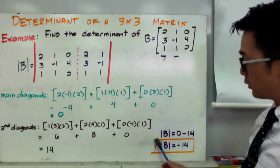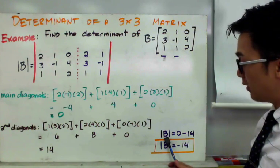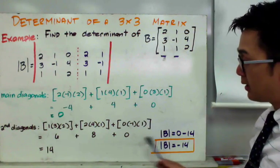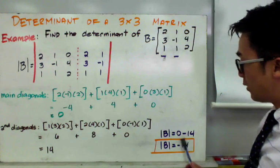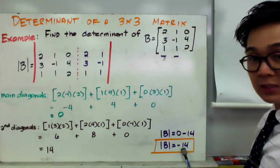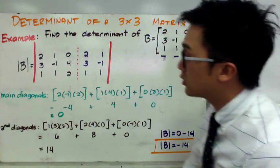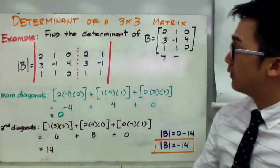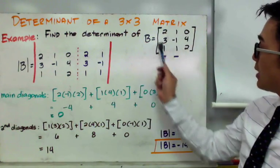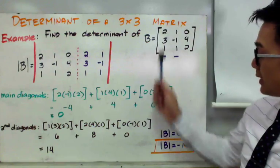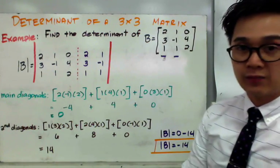Our final solution to find the determinant of matrix B is 0 minus 14, which gives us negative 14. Therefore, the determinant of matrix B, a 3x3 matrix, is equal to negative 14.